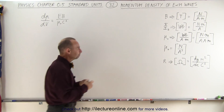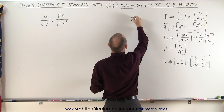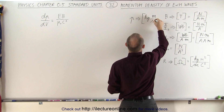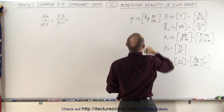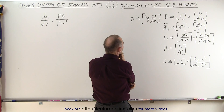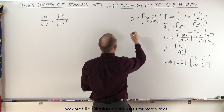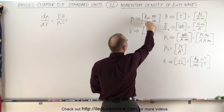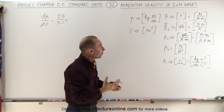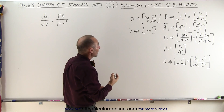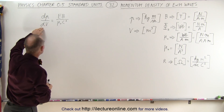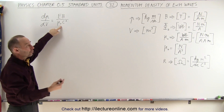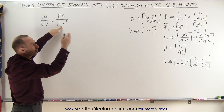The units of momentum can be written as kilograms times meters per second, because momentum is mass times velocity. Volume has units of cubic meters, which means if you take momentum divided by volume, that gives you the units for momentum per unit volume — the momentum density. So the units should be kilograms meters per second per cubic meter.